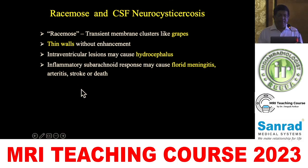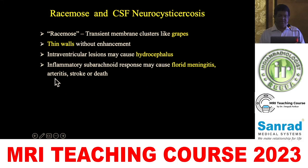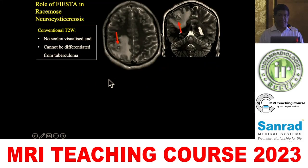In the ventricles and CSF subarachnoid spaces, you get what is called the racemose type of cysticercosis, which looks like a cluster of grapes. The walls are thinner, the size is larger, and they can cause hydrocephalus. In the subarachnoid space, they can cause florid meningitis, arachnoiditis, stroke, and even death.